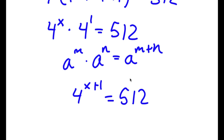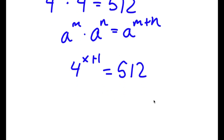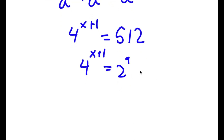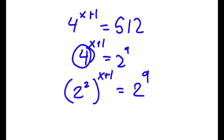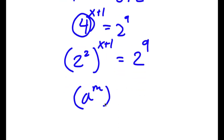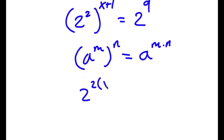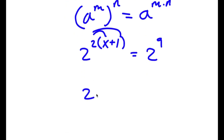Now I'm going to rewrite 512 as 2 to the power of 9. So I have 4 to the power of x plus 1 is equal to 2 to the power of 9. And 4 I can rewrite as 2 squared. So I have 2 squared to the power of x plus 1 equals 2 to the power of 9. Using the rule a to the power of m to the power of n equals a to the power of m times n, I get 2 to the power of 2 times x plus 1. Distributing the 2 gives 2 to the power of 2x plus 2 is equal to 2 to the power of 9.